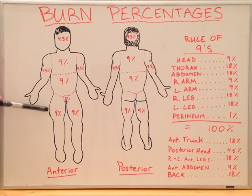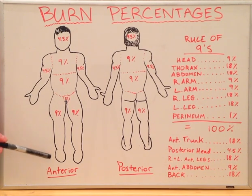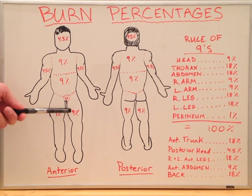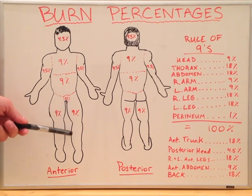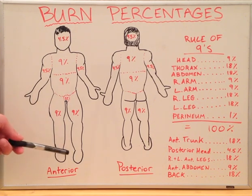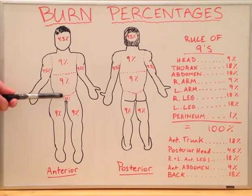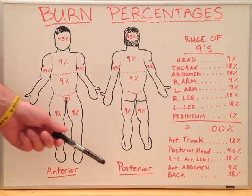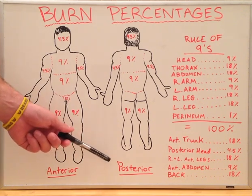The right leg — thigh, leg, and foot — is 9%, as well as the left thigh, leg, and foot at 9%. The perineum constitutes 1%.